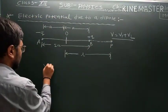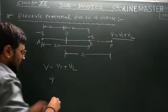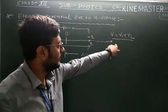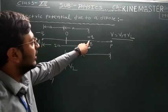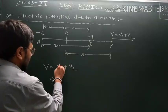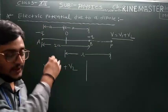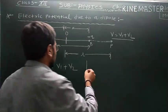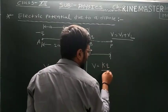We write V equals V1 plus V2. Here V1 is the electric potential due to charge minus Q at point P, and V2 is the electric potential due to charge plus Q at point P. We already derived the formula for electric potential: V equals K·Q upon R.